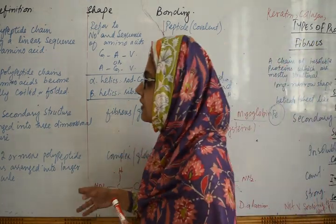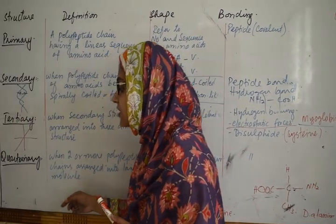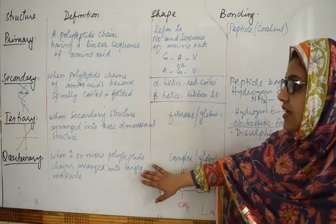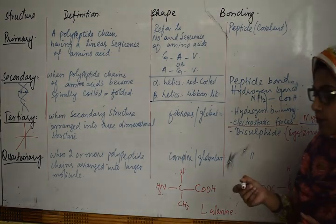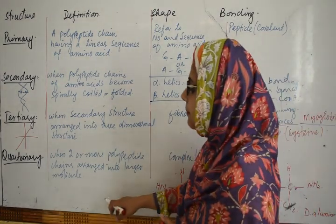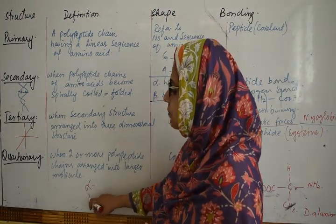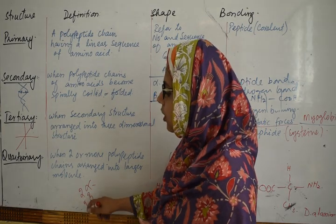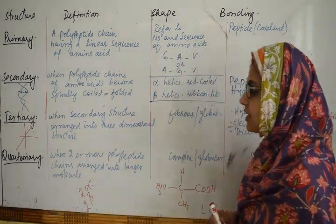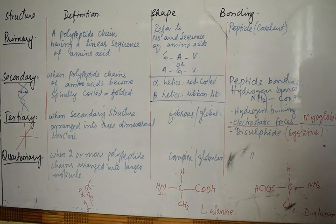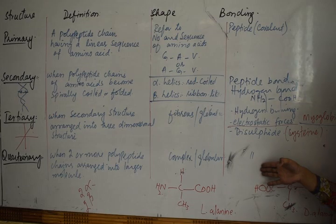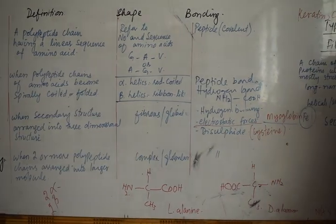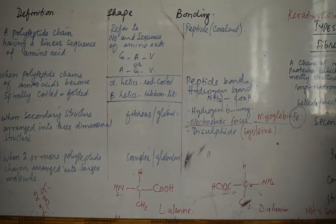The last level of organization is called the quaternary structure. This is the organization in which we have two or more polypeptide chains. For example, hemoglobin has alpha and beta chains — two polypeptide chains arranged into a larger molecule. The same stabilizing forces are present. For example, hemoglobin is a classic example of quaternary structure.